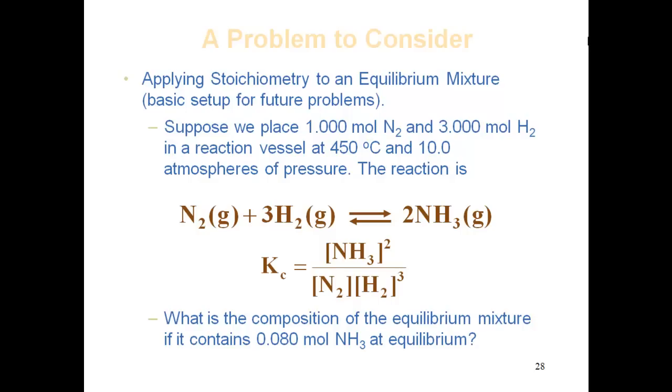Now if we were doing an equilibrium problem, we would have to involve the Kc expression, which would be your concentration of ammonia squared divided by the concentration of nitrogen times the concentration of hydrogen to the cube.